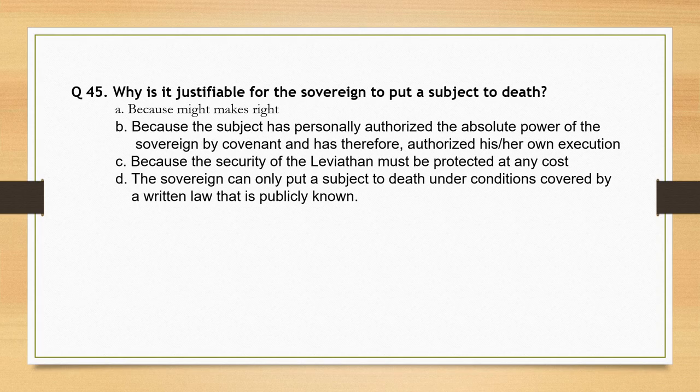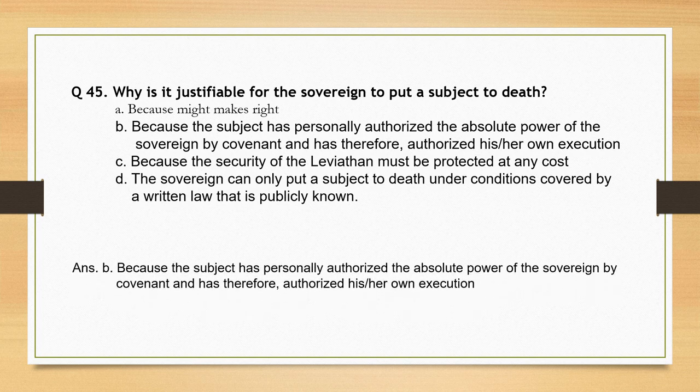Why is it justifiable for the sovereign to put a subject to death? The correct option is option B: because the subject has personally authorized the absolute power of the sovereign by covenant and has therefore authorized his or her own execution.